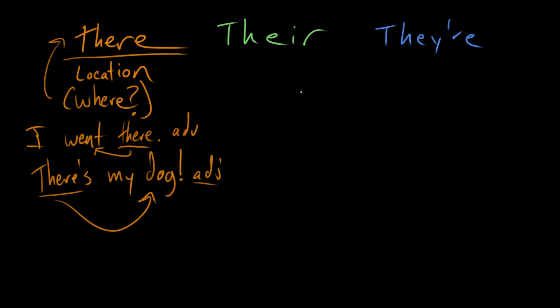The second member of this confusing trio is their, T-H-E-I-R, which is a possessive determiner. Let's just call that a possessive. So this is when something belongs to a they, and it's an adjective. So let's just call this a possessive adjective for a they.